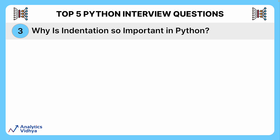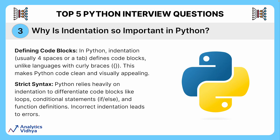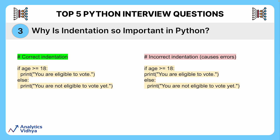The next question is: why is indentation so important in Python compared to other languages? Unlike some other languages that use curly braces, Python relies on indentation — basically spaces or tabs — to define code blocks. Think of indentation as a visual map of your Python program. It tells Python exactly which lines of code belong together within loops, conditional statements like if and else, and functions. Incorrect indentation throws a wrench in the works, leading to errors.